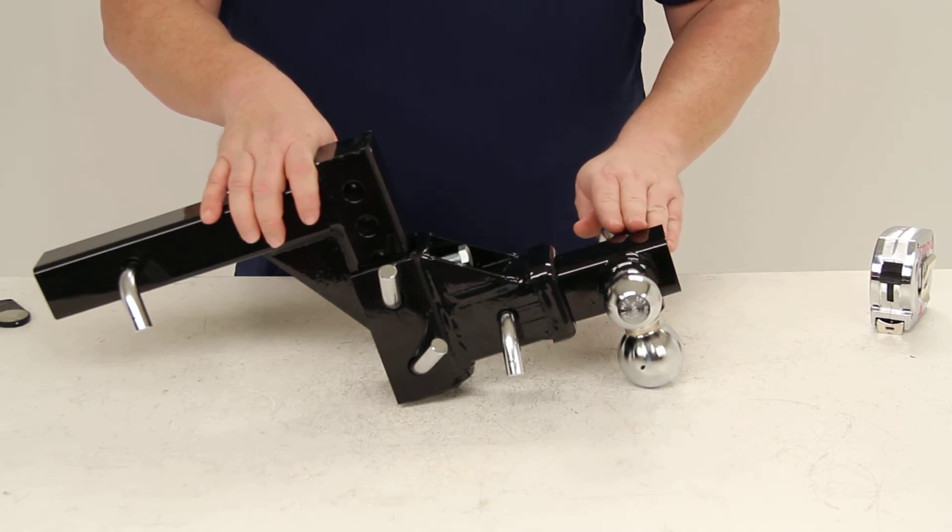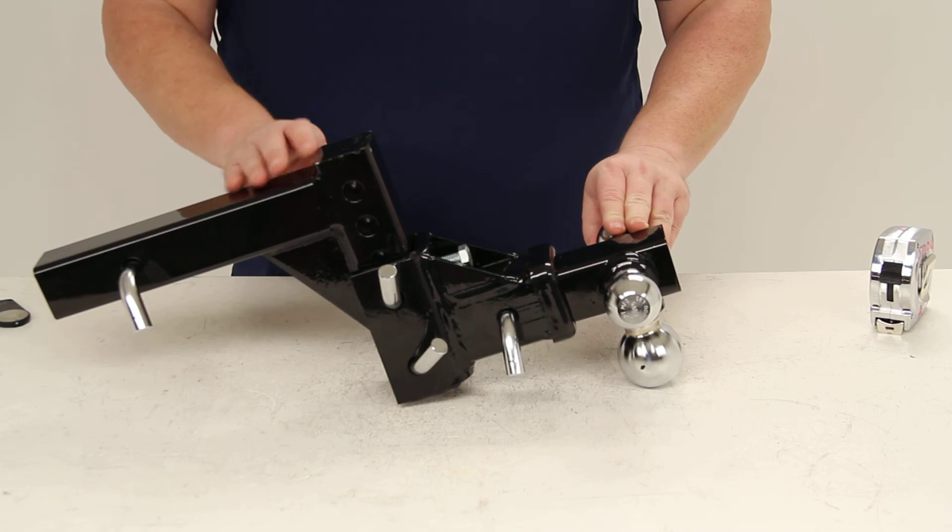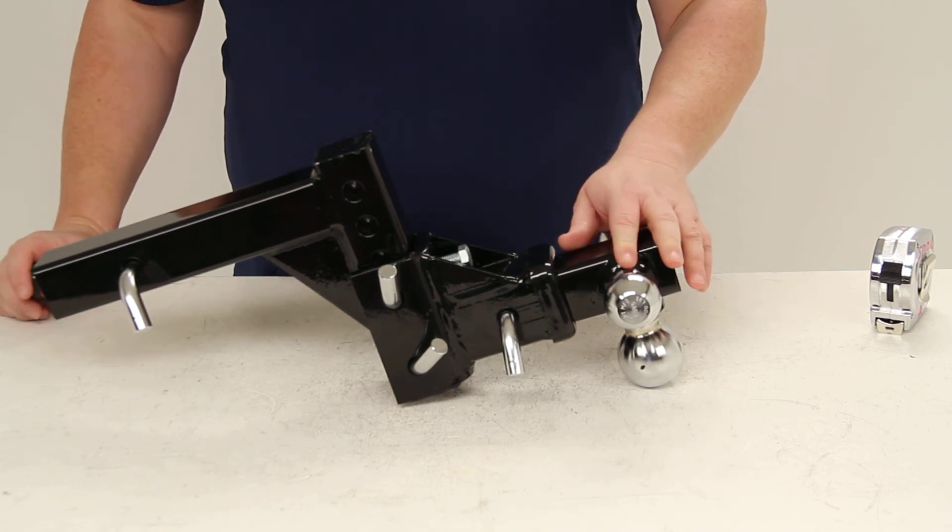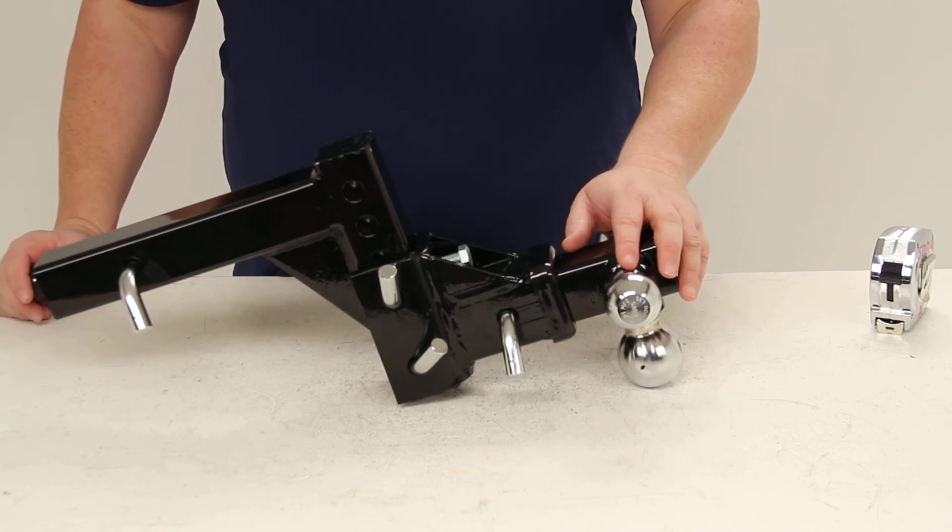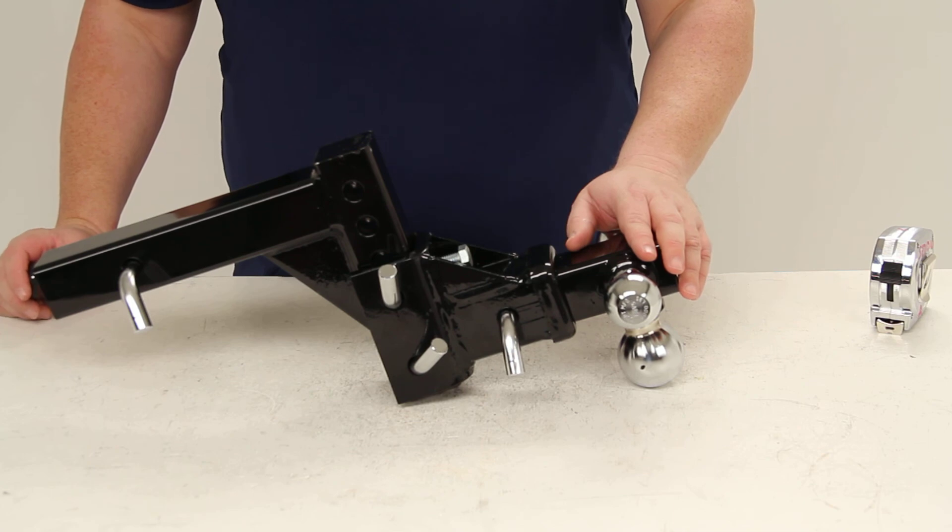This product does come with a limited seven-year warranty. That's all we have today for our Curt multi-ball adjustable ball mount for two-inch trailer hitches, number D900.